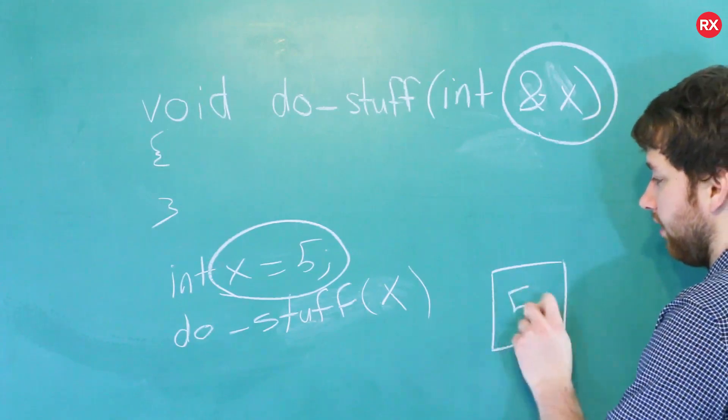Now in this situation, this x here and this x here are going to refer to the same area of memory. So if we pass in x value of 5, and then inside of here we assign the value 11, well this is going to be replaced with 11, and after this function call x will now be valued at 11. So that is passing by reference.